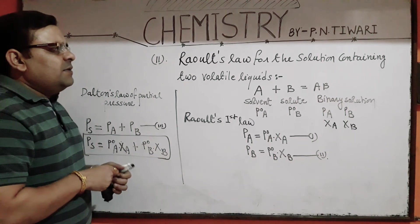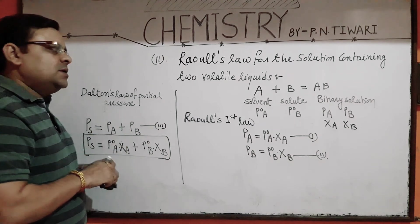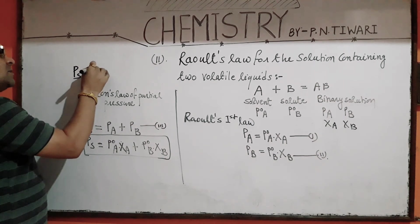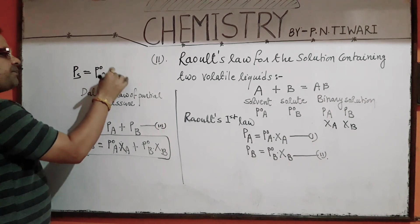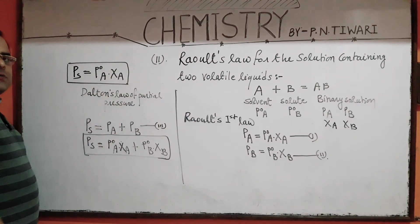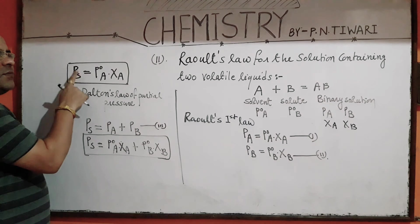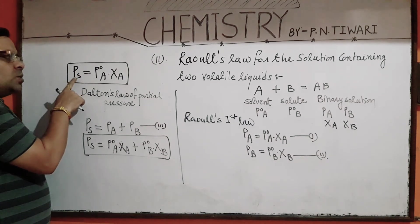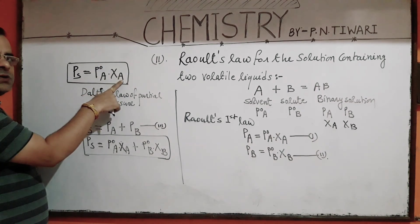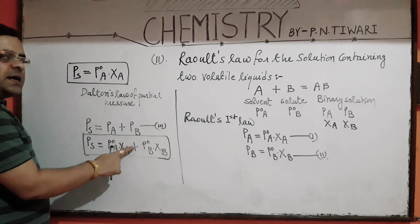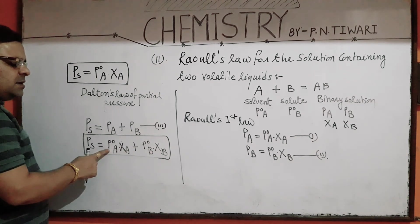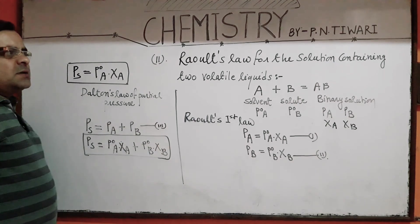If the solution contains a non-volatile solute, then the total vapour pressure Ps equals P0 into XA only — this equation is applicable for solutions containing non-volatile solute. For a solution containing two volatile liquids, the total vapour pressure equals the sum of the products of the vapour pressures of pure components and their respective mole fractions in the solution.